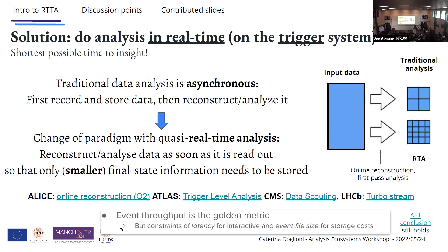What real-time analysis means is not hard real-time like engineering — it means doing analysis as close as possible to the detector on the trigger system. Event throughput and time to insight are the key metrics. We move from an asynchronous model where you first record and store data, then reconstruct and analyze, to doing every step as soon as possible. Instead of getting bigger blocks of fewer events, you get more smaller blocks of event-sized data.